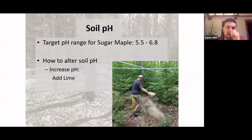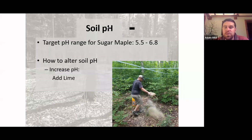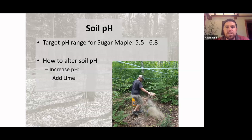A question came in asking about pH preference for red maples. They're in a similar range — ideal would be around 5 to 6.5. You can go a little lower and more acidic for red maples, but it's a pretty close range to sugar maples.